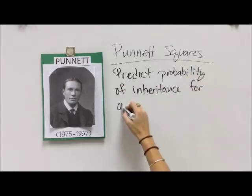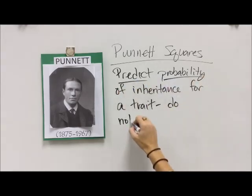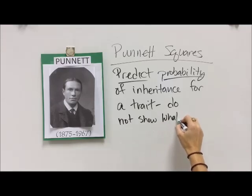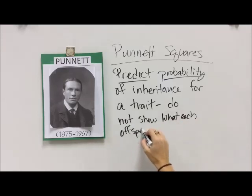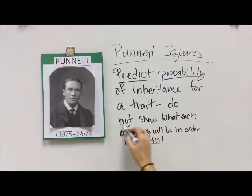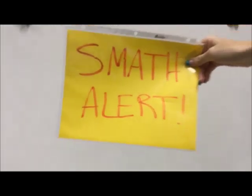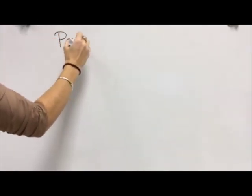The thing with Punnett Squares is that they predict the probability of inheritance — it gives us a percentage or ratio of what the children will turn out like. It's a probability. It does not show what each offspring will be like in order, so the first box doesn't mean the first child will look like this and the second box the second child, because that's not how it works. It just gives us a percentage probability of what could happen.